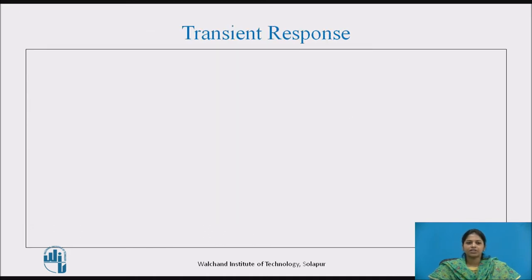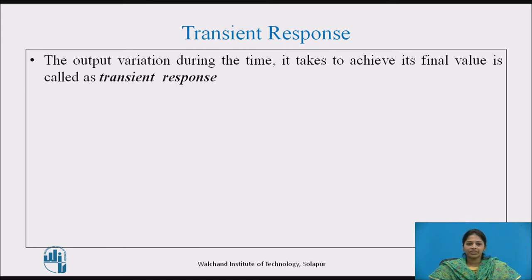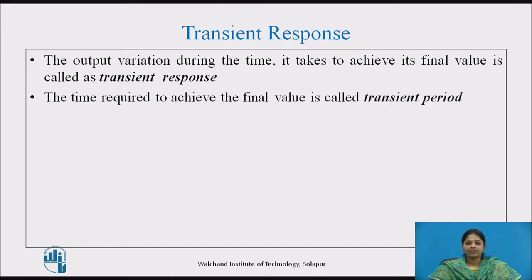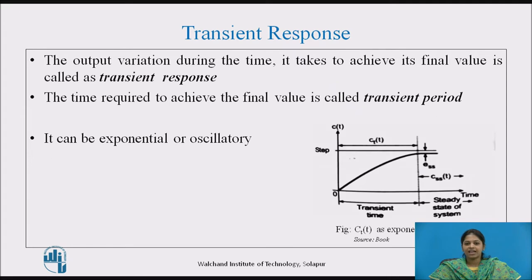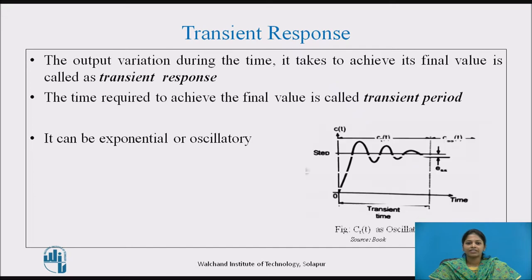Transient response: The output variation during the time it takes to achieve its final value is called the transient response. The time required to achieve the final value is called the transient period. This can also be defined as that part of the time response which decays to zero after some time as the system output reaches its final value. The transient response can be exponential or oscillatory, as shown in the figure. Symbolically, it is denoted as C_T(t).